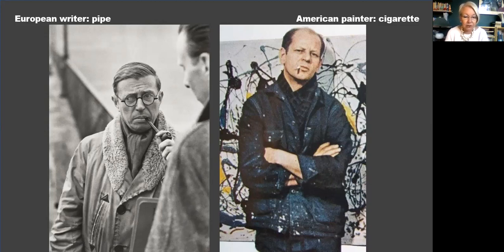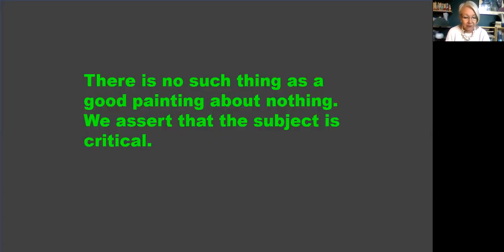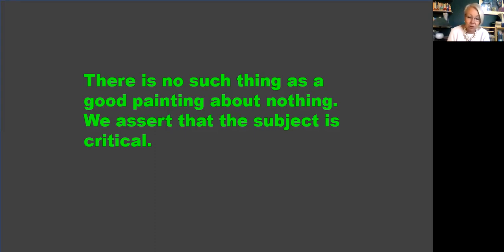The Abstract Expressionists really seized on the Surrealists' automatic, anti-rational art making of free gesture and improvisation. Spontaneity and process — that is, how the art was actually made — was crucial. And yet, in a famous letter to the New York Times in June 1943, Adolf Gottlieb and Mark Rothko wrote: 'To us, art is an adventure into an unknown world of the imagination, which is fancy-free and violently opposed to common sense. There is no such thing as a good painting about nothing. We assert that the subject is critical.' This may surprise you — how can the subject be critical in an abstract painting where it looks like there is no subject?